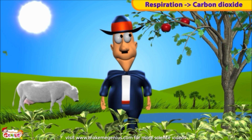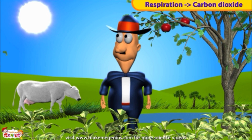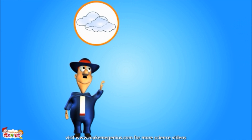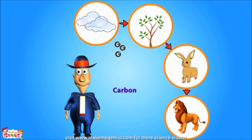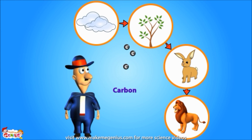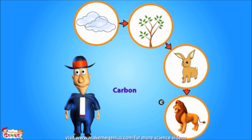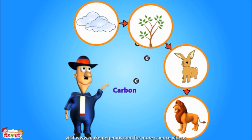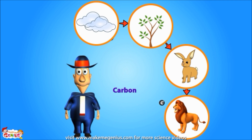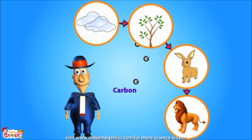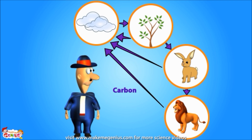How does carbon move from the atmosphere to living things and back? Plants breathe in carbon dioxide to make food. Then this food is eaten by animals. Sometimes smaller animals are eaten by bigger animals. This way, carbon is transferred from air to plants and animals. Animals and plants breathe out carbon dioxide, then it goes back into the air.